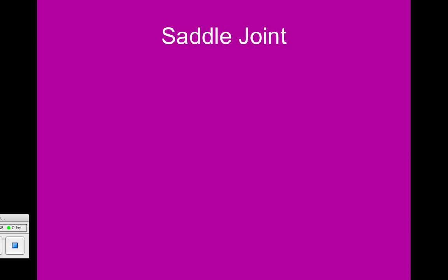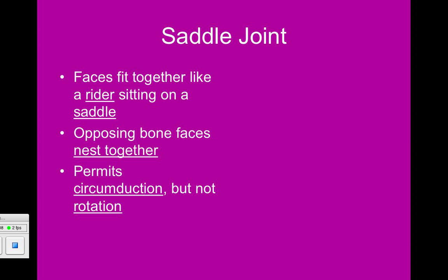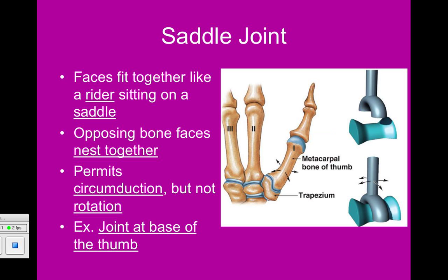Saddle joints literally fit together like a rider sitting on a saddle — the opposing bone faces nest together and hook into each other. This type of joint permits circumduction but not rotation. The example is the joint at the base of the thumb, which allows us to twiddle our thumbs, but if you try to rotate your thumb you can't do it without physically holding it with your other fingers and gently twisting.